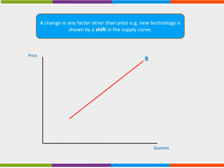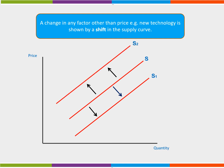Changing any factor other than price that lowers the cost of production, such as a government subsidy, changes in productivity or new technology, is shown by a shift in the supply curve. An increase in supply can be seen by shifting the supply curve downwards and to the right from S to S1. A decrease in supply can be seen by shifting the supply curve upwards and to the left from S to S2.